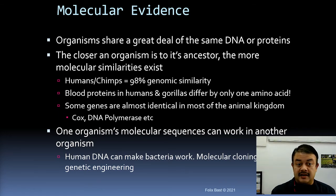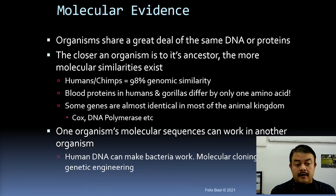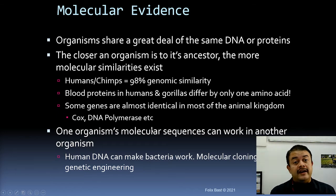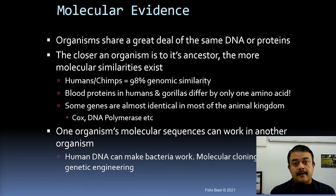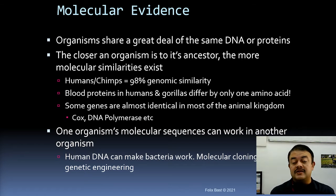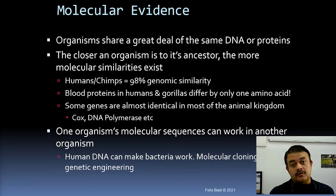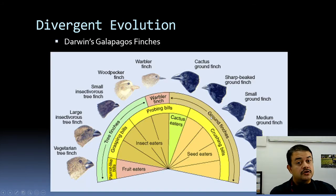Some genes are almost identical across most of the animal kingdom, like the COX gene and DNA polymerase. One organism's molecular sequence can function in another organism — that is how genetic engineering works. For example, insulin genes can be expressed in yeast or E. coli. The fact that bacteria can express human coding DNA sequences is itself proof that evolution has produced deeply conserved molecular machinery.